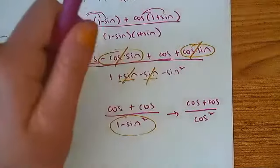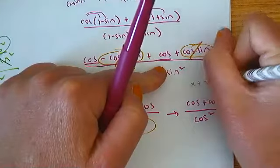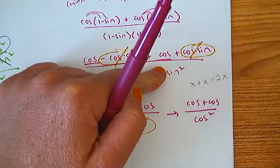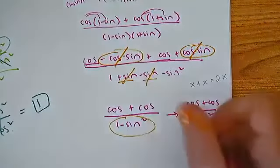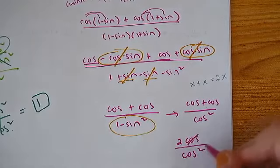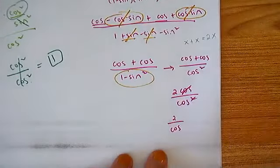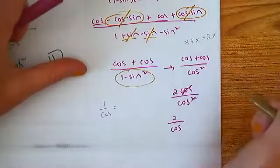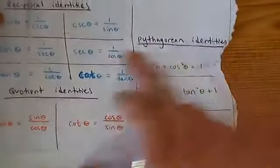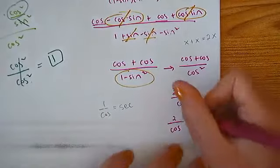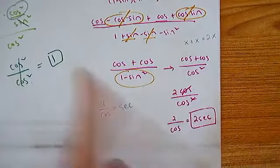One minus sine squared equals cosine squared. Cosine plus cosine is two cosine — like x plus x is 2x. So it's two cosine over cosine squared. Cancel one cosine, and what we have is two over cosine. One over cosine is secant, so two over cosine is two secant. That counts as a single term.